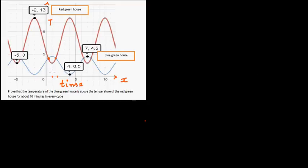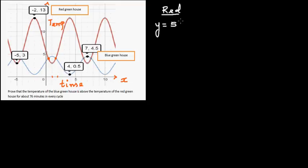Let's write the equation just to recapitulate. The temperature is on the y-axis and time is on the x-axis. For the red graph, the equation is y = 5cos(π/3·x + 2π/3) + 8. The amplitude was 5 because the minimum is 3 and maximum is 13, so the baseline is their average, which is 8. The distance from 3 to 8 is 5, giving an amplitude of 5. The period was 6 hours.